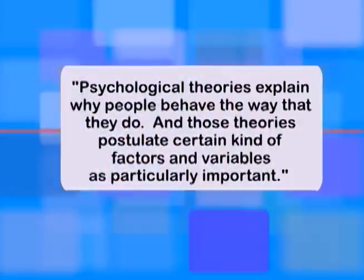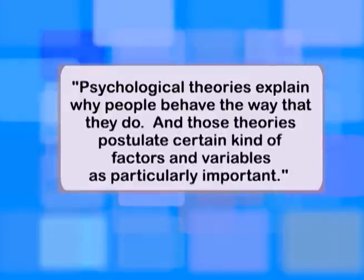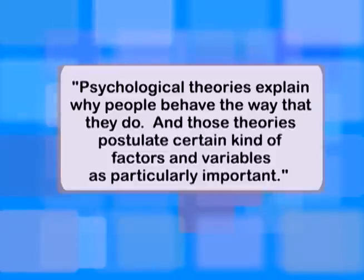As you engage in theory, what you're engaging in is a system for explaining how the world is the way it is. Scientists posit theories which explain how something has happened, why the world is as it is. In biology, evolutionary theory explains the variety of species and how those different species came about in adaptation to their environment. There are cosmological theories, planetary theories, sociological theories explaining society, economic theories explaining wealth, and psychological theories explaining why people behave the way they do. Those theories postulate certain kinds of factors and variables as particularly important.